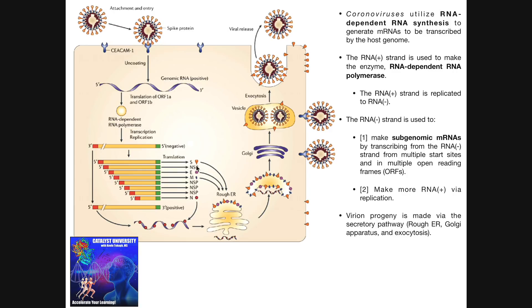To make the viral progeny: all the viral proteins made via translation from the subgenomic mRNAs are produced specifically in the rough ER, because this involves the secretory pathway. The secretory pathway involves the rough ER, the Golgi apparatus, and eventual exocytosis. Once proteins are made in the rough ER, they are sent along with the sense RNA to the Golgi apparatus, where they are packaged into vesicles as viral progeny. These vesicles are then exocytosed, releasing the mature coronavirus to infect other cells.